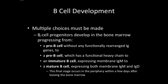The B cell progenitors develop in the bone marrow, progressing from a pro-B cell to a pre-B cell. The main defining feature of a pro-B cell is that we're basically starting off in the germline and we're going to start making heavy chain genes.